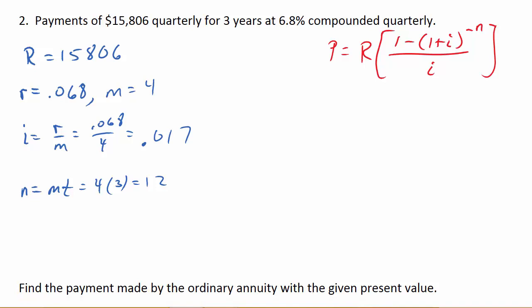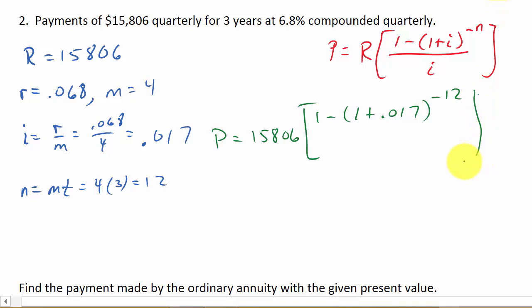So now let's plug everything in. So I get P is equal to R, which is 15,806 dollars, times 1 minus 1 plus 0.017 raised to the negative 12. Alright, so that's all divided by I, which is 0.017.